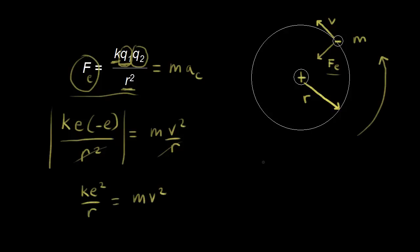Continuing with classical physics, next we're going to talk about angular momentum, which is a tricky concept. Angular momentum is capital L, and one equation for it is R cross P, where R is a vector and P is the linear momentum. Linear momentum equals mass times velocity, so we're talking about the mass of the electron times the velocity of the electron. Let's go ahead and plug this in for angular momentum, taking it about the center of our circle.